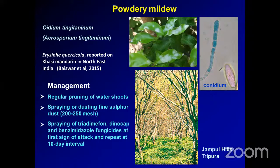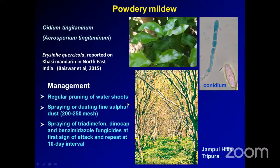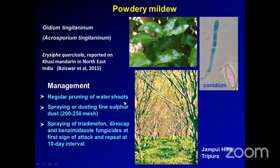Powdery mildew, caused by Oidium tingitaninum, is a major problem especially in the northeastern region and some parts of the Punjab region. A picture from the Jampui Hills area of Tripura shows this disease. For management, regular pruning especially of water shoots — which are the most colonized areas for powdery mildew — is needed, along with spraying and dusting of fine sulfur dust. Sulfur is one of the important components for control of powdery mildew, and some fungicides can also be used.